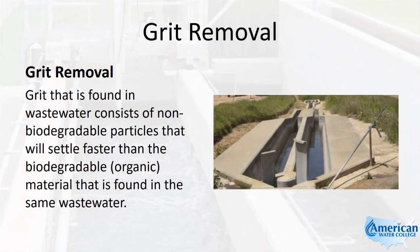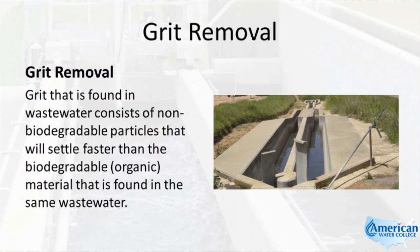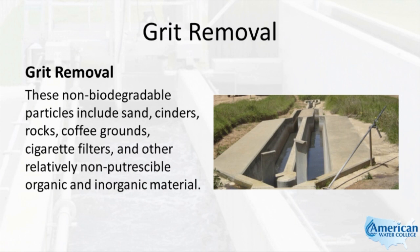Grit found in wastewater consists of non-biodegradable particles that settle faster than the biodegradable organic material found in the same wastewater. These non-biodegradable particles include sand, cinders, rocks, coffee grounds, cigarette filters, and other relatively non-putrescible organic and inorganic material.